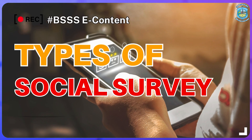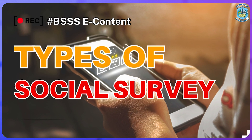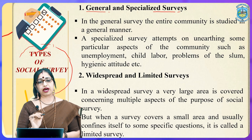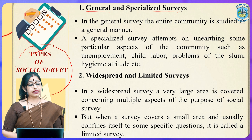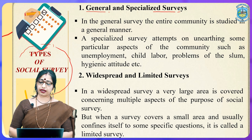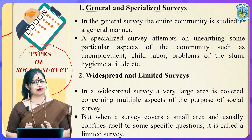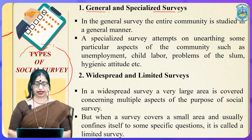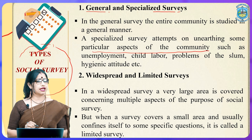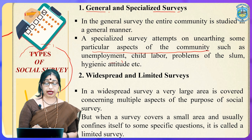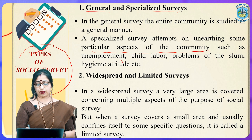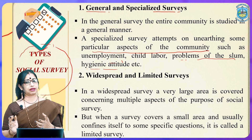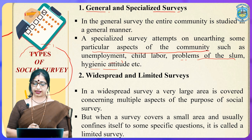The types of social survey: the first type is general and specialized social surveys. In a general survey, the entire community is studied in a general manner. A specialized survey attempts to unearth some particular aspects of the community such as unemployment, child labor, problems of the slums, hygienic attitudes, prostitution, beggary, terrorism, nepotism, etc.